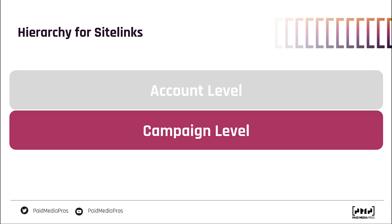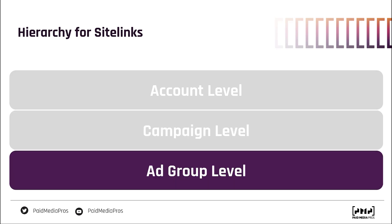Google will always pick the lowest-level site links to show for your ads whenever you are triggered for a search. If you have some campaigns with site links added to them and others without site links at the campaign level, but you do have site links at the account level, then campaigns without their own dedicated site links will show the account-level version. The same hierarchy logic is true for ad groups — if specific ad groups have site links associated with them, those are the site links that will show, and the campaign and account level site links will not.